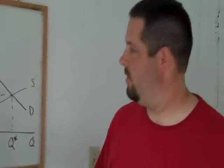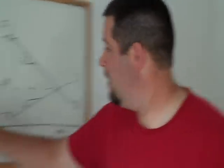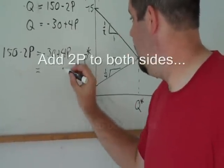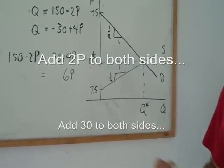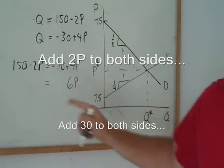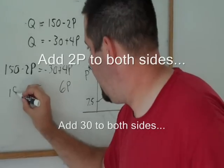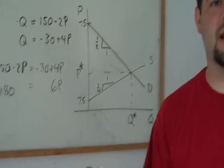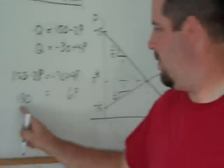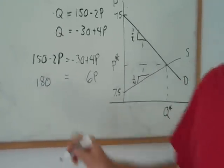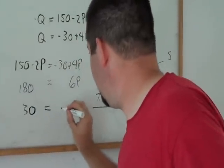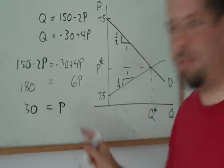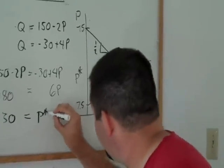Now, here's how we'll do this. We'll group like terms. This minus 2, add minus 2P to both sides. We'll get a 6P over here. Add 30 to both sides. We'll get a 180 over here. Now, we can just divide both sides by 6. Fortunately, 18 divided by 6 is just 3. So, we can get 30 because there are 10 threes. Equals the price. And that is our P star. That means that the price right here is 30.